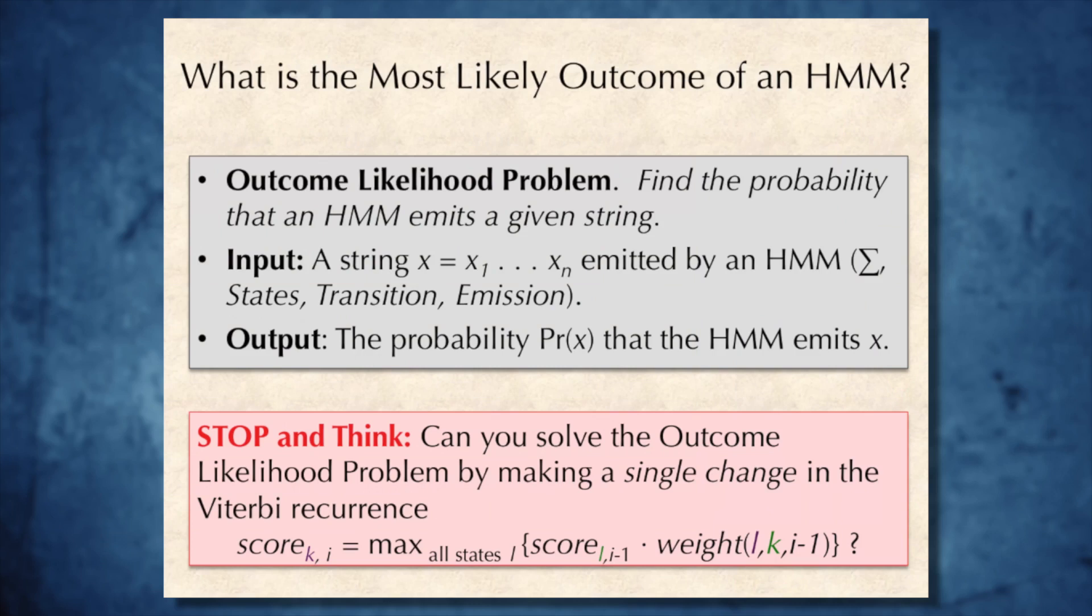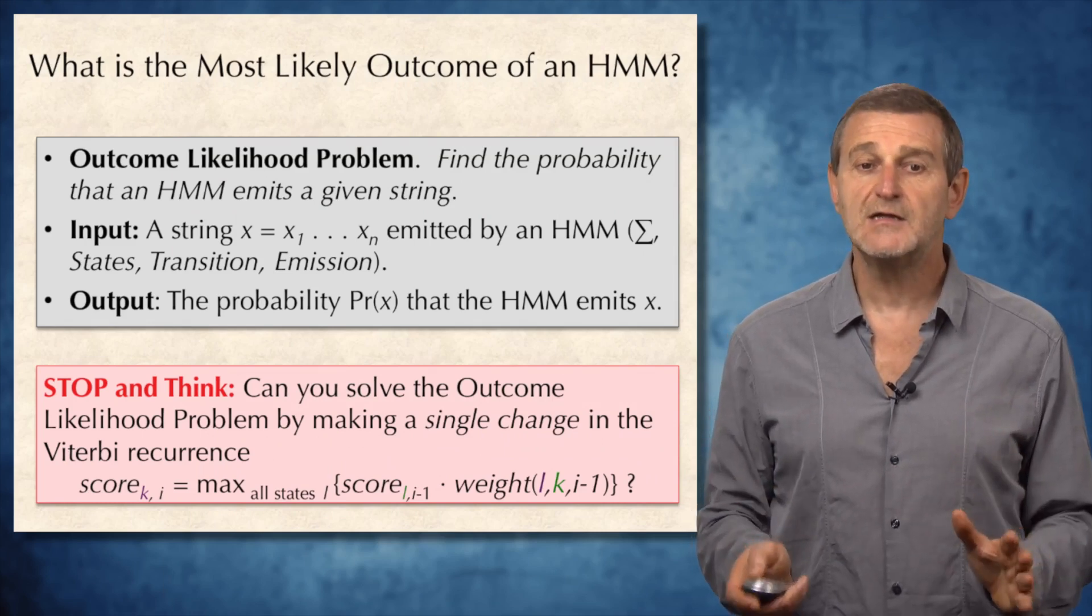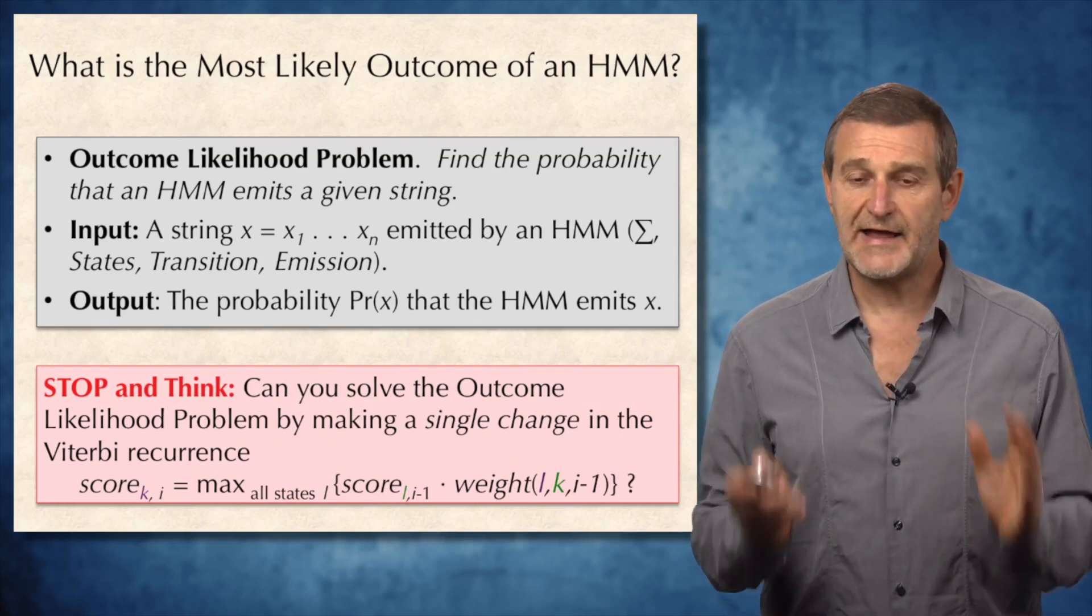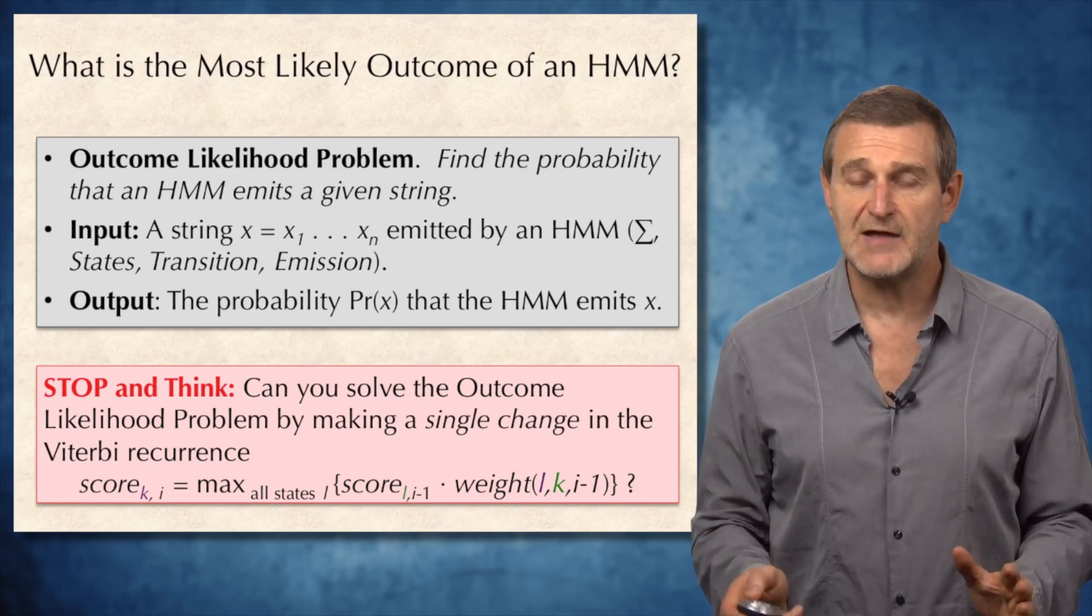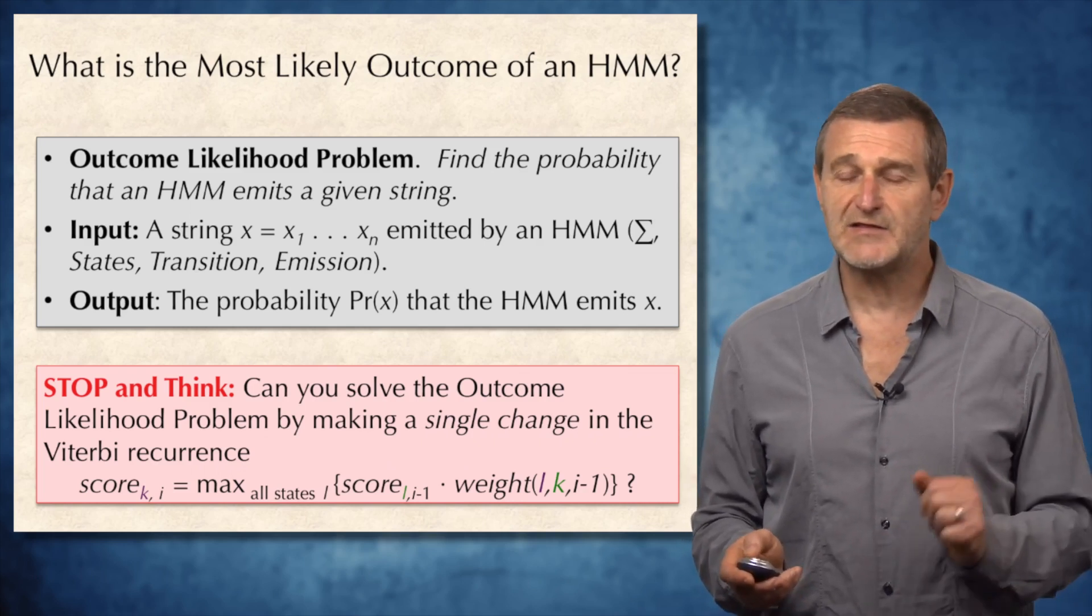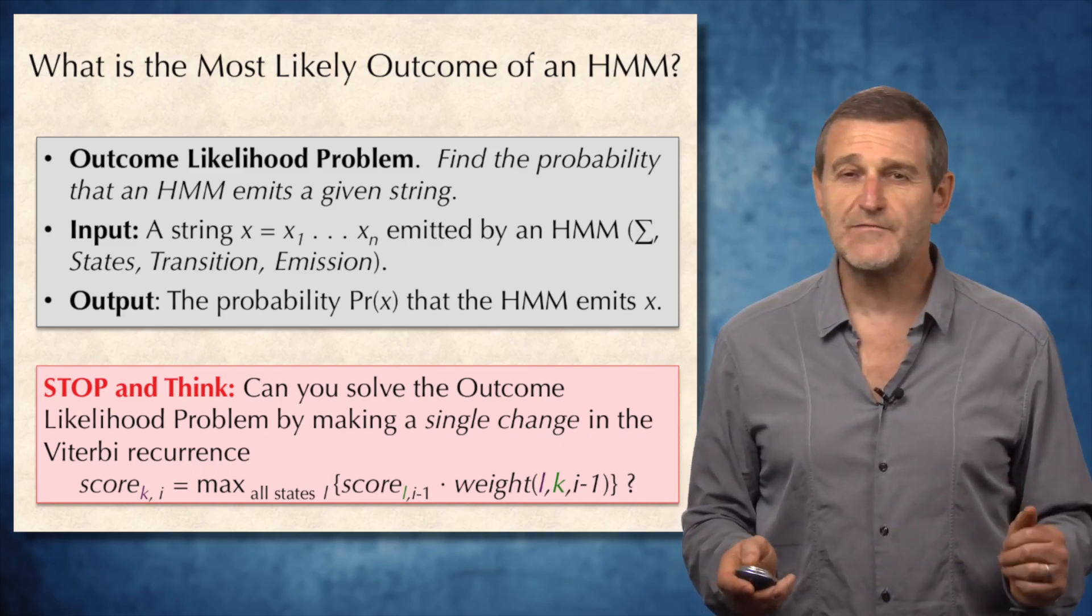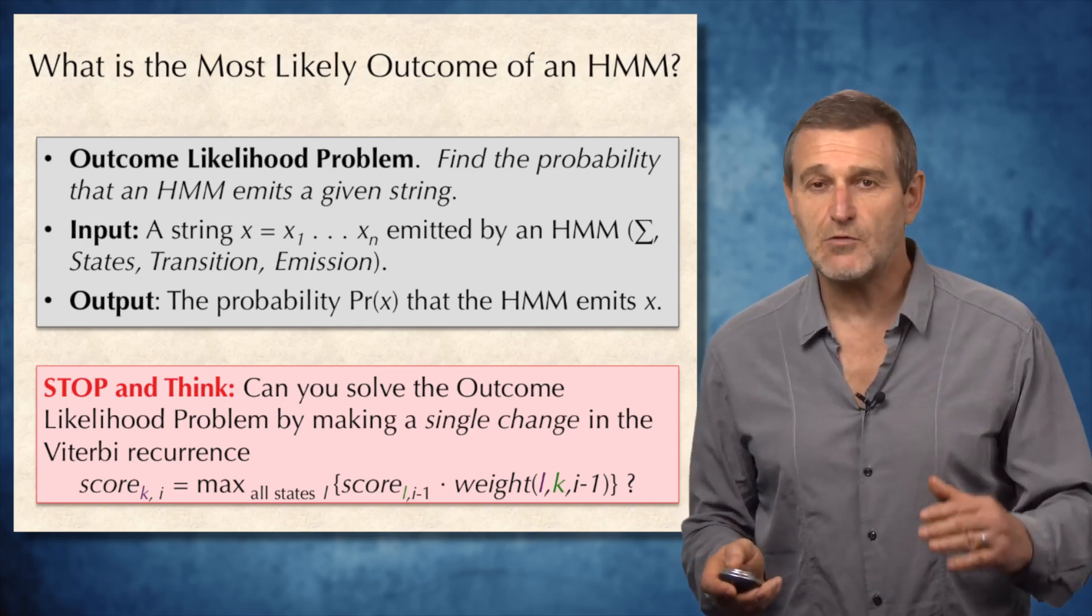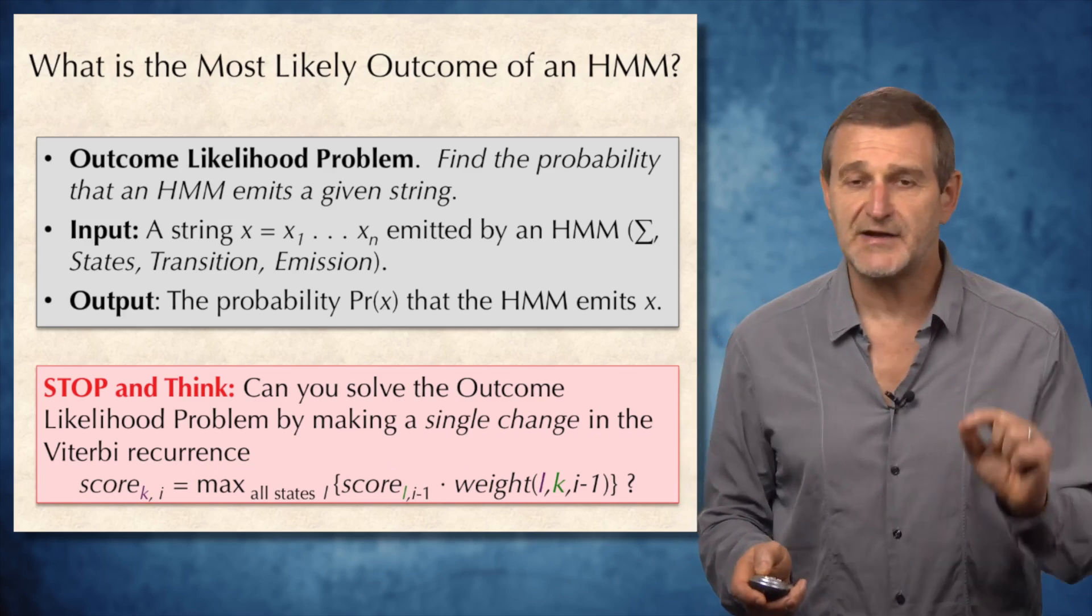So, to find out what is the most likely outcome of an HMM, we first need to solve the following outcome likelihood problem. We find the probability that an HMM emits a given string. The input is the string x emitted by an HMM, and the output is the probability that the HMM emits this string. And since you already saw the similarity between computing probability of x and Viterbi algorithm, let's try to figure out whether we can solve the outcome likelihood problem by changing a single symbol in the Viterbi recurrence.